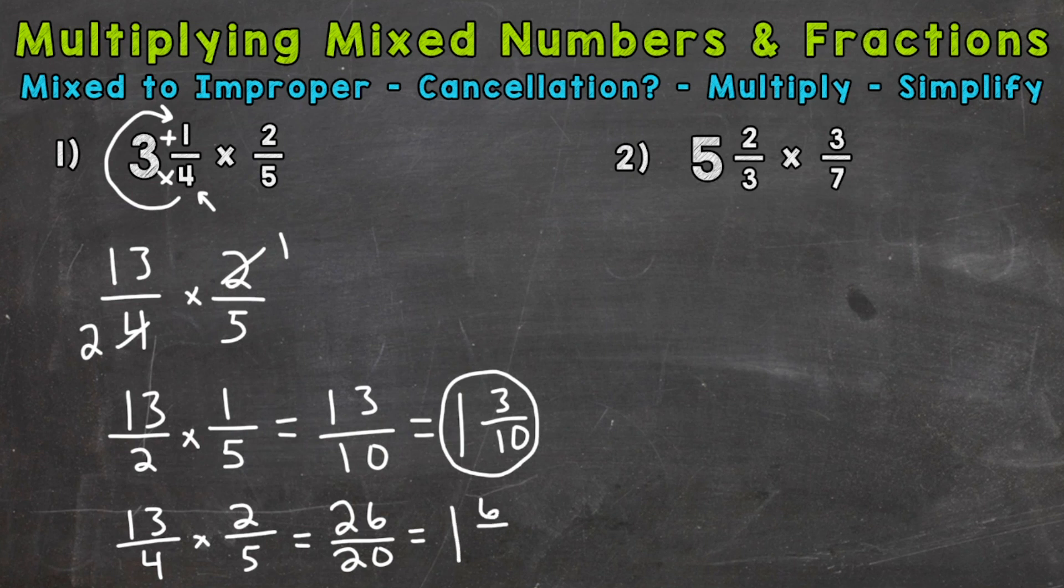With the remainder of six, keep the denominator of 20 the same. Now we can simplify the fractional part because we have a greatest common factor of two between six and 20. So divide each by two. And we end up with one and three tenths. So same answer. Just we had to simplify at the end there instead of using cancellation and simplifying the problem before we multiply.